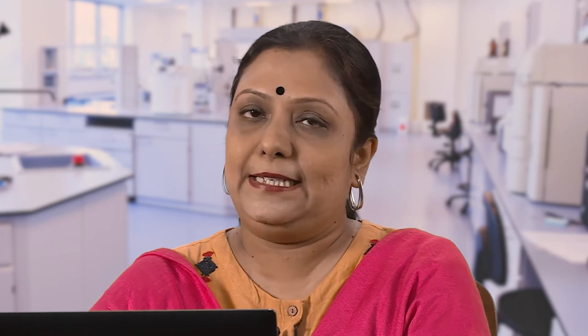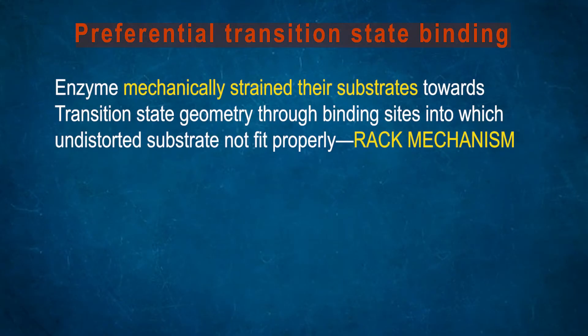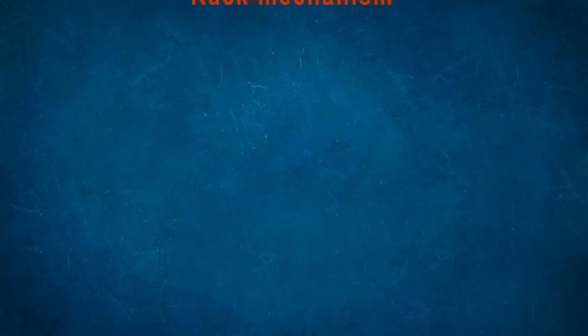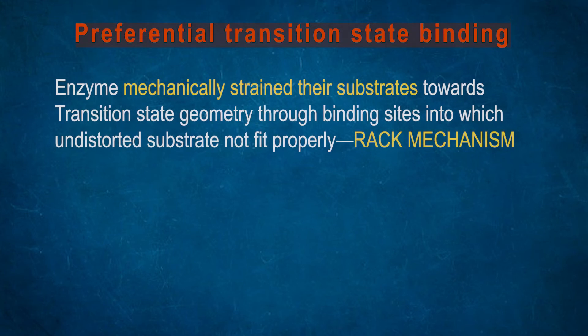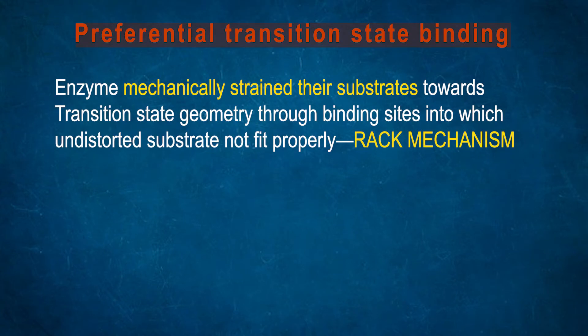Preferential transition state binding: Enzymes mechanically strain their substrates towards transition state geometry through binding sites into which undistorted substrates do not fit properly. So enzymes twist or distort substrates in such a way that the transition state can be easily formed. This is called the rack mechanism.